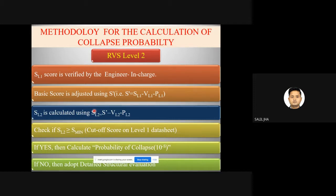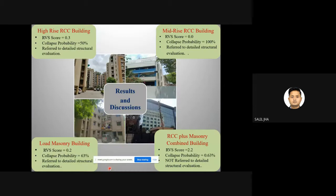The RVS Level 2 score is calculated similarly to Level 1, but uses the adjusted baseline score, subtracting VL2 and PL2 (vertical and plan irregularities from Level 2 data sheet). A check is made: if the final RVS Level 2 score ≥ cutoff score, the probability of collapse is calculated using the formula 10^(−S), where S is the final RVS score; if not, detailed structural evaluation is adopted.